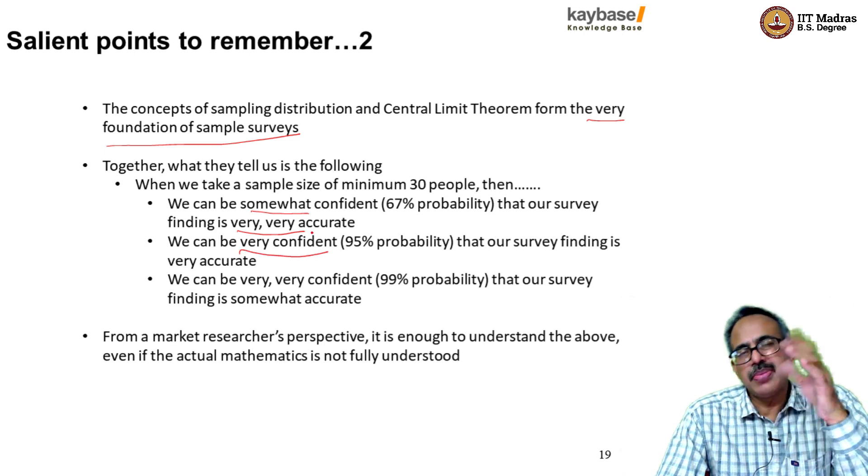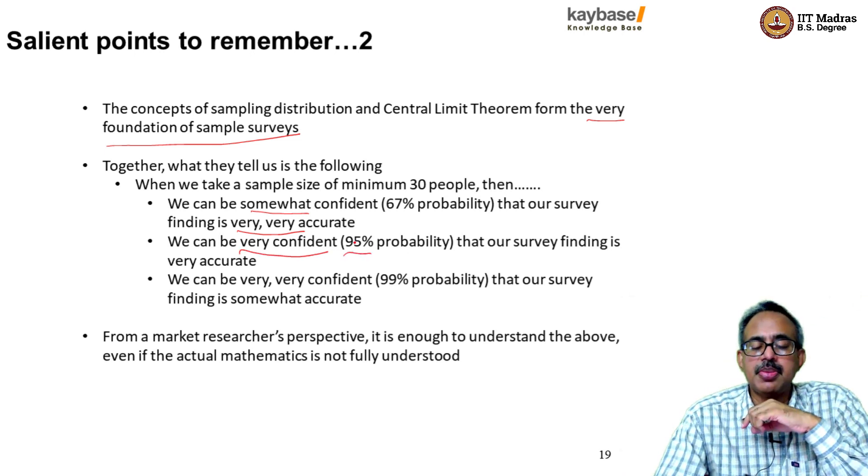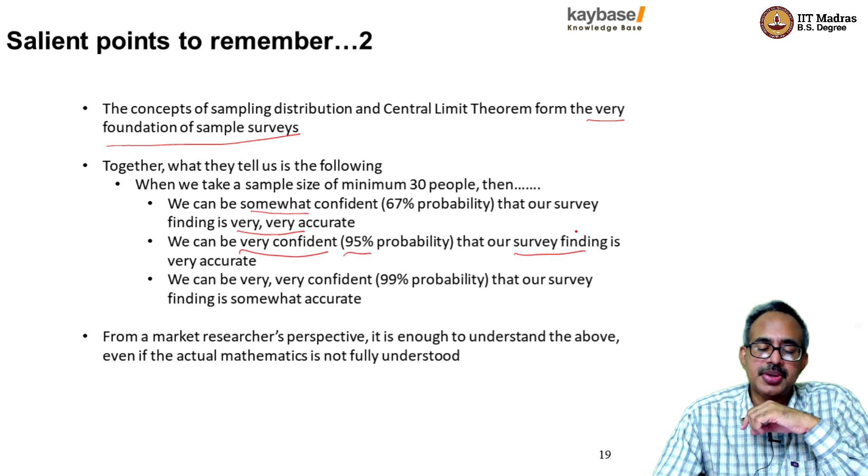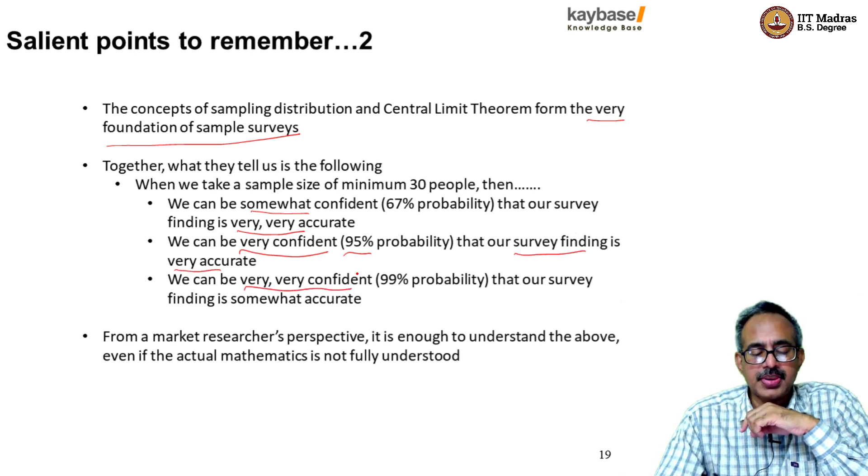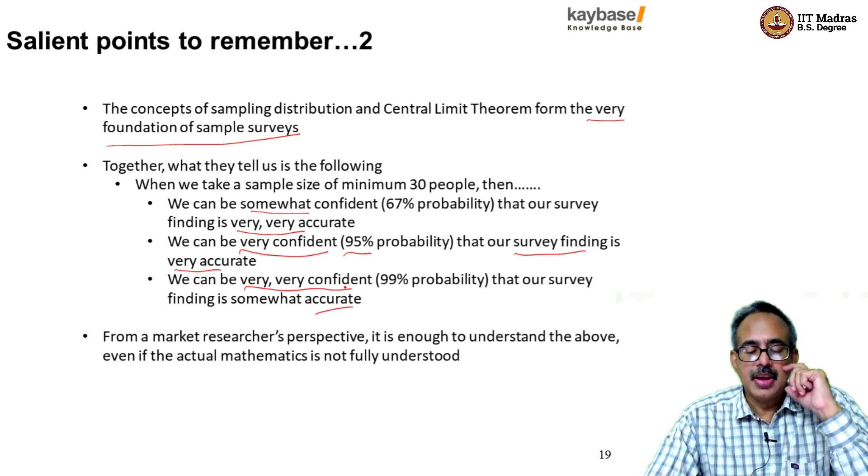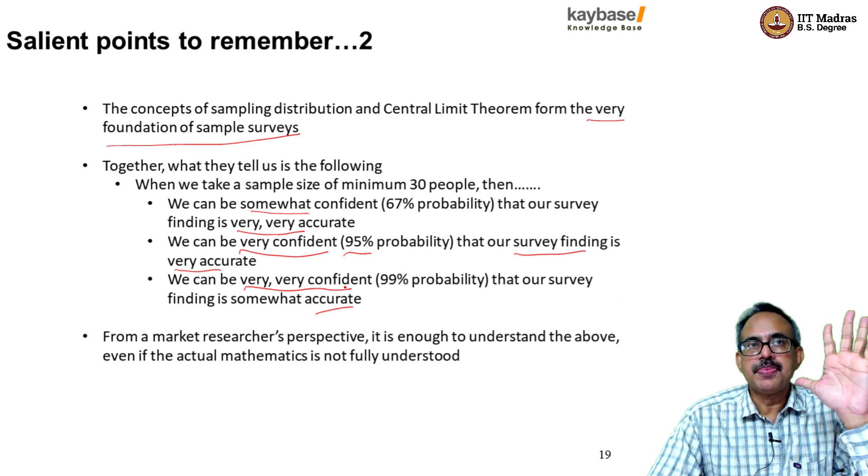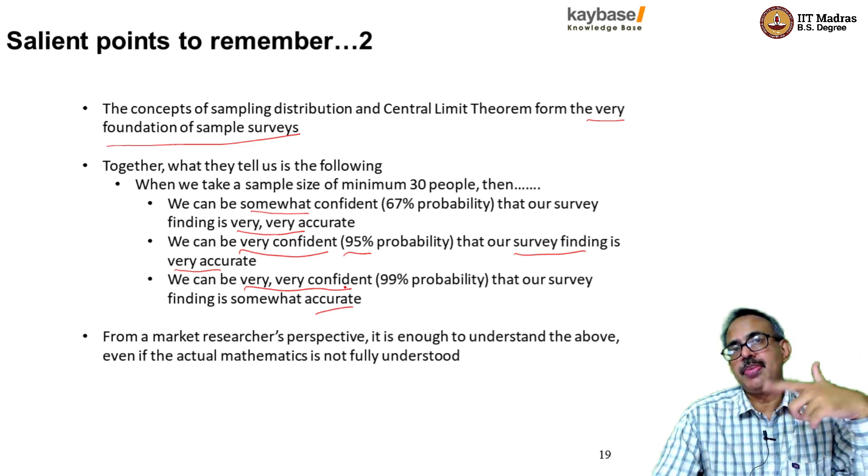We can be very confident or quite confident, basically 95% probability, that a survey finding is very accurate or quite accurate. We can be very, very confident, 99% probability, that a survey finding is somewhat accurate. From a market research perspective, it's actually enough to understand these salient points.